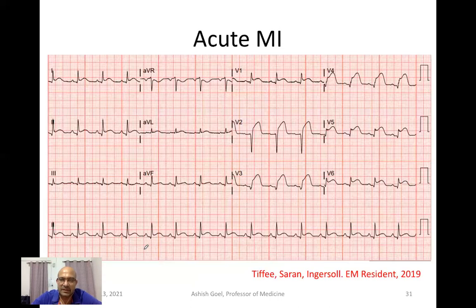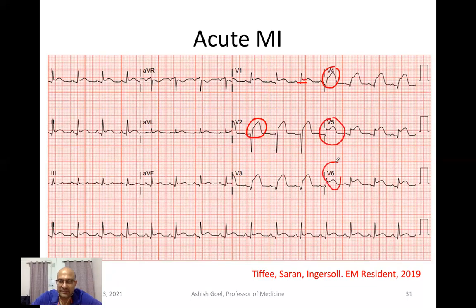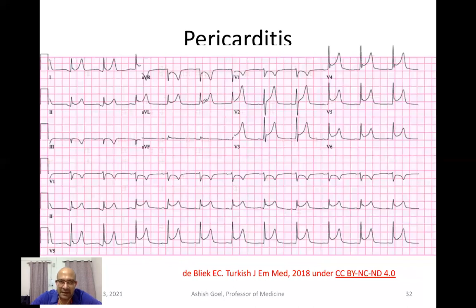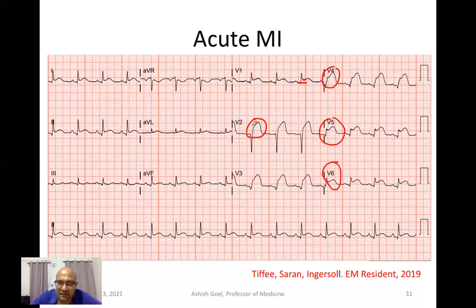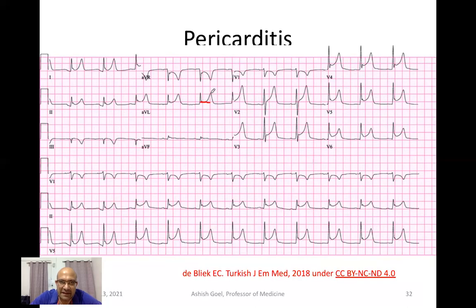This ECG shows acute MI with ST segment elevation clearly seen in multiple leads — the normal baseline is flat but the ST segment here is elevated. In pericarditis, ST elevation is also present but of a different morphology: acute MI shows convex ST elevation, whereas pericarditis shows concave ST elevation. This difference in the shape of the ST segment is a key distinguishing feature between these two conditions.